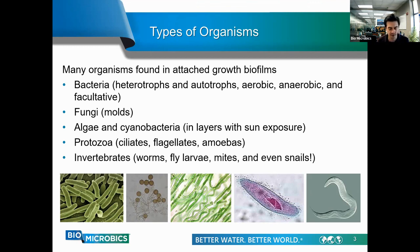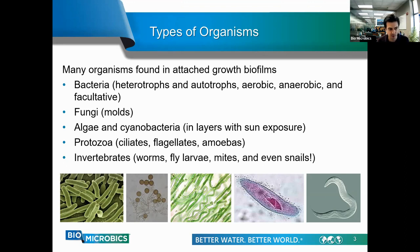Bacteria in the biofilm include heterotrophic organisms, autotrophic organisms, as well as aerobic, anaerobic, and facultative types. Their primary functions include removing organic carbon or transforming nitrogen. Facultative types can adapt to both oxygen-rich and low-oxygen environments.